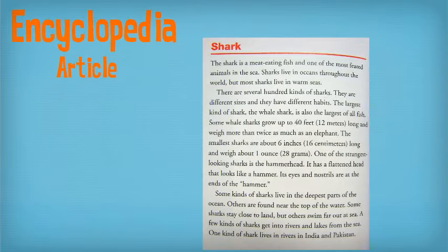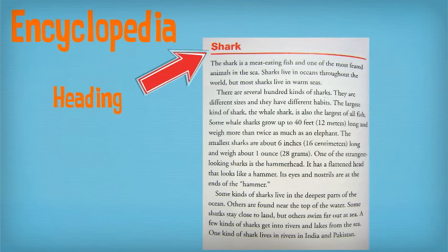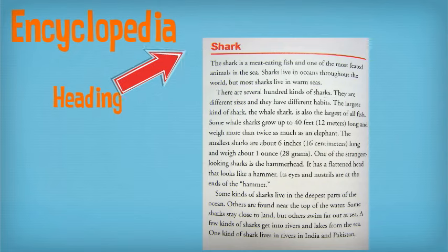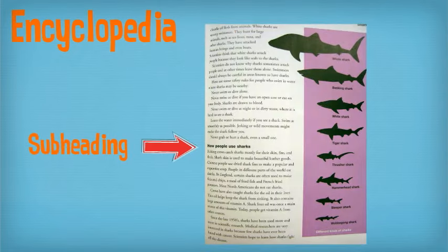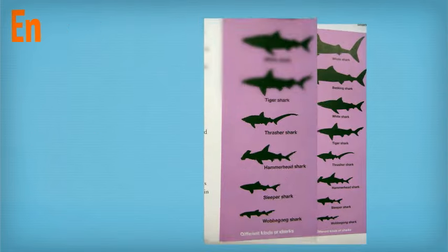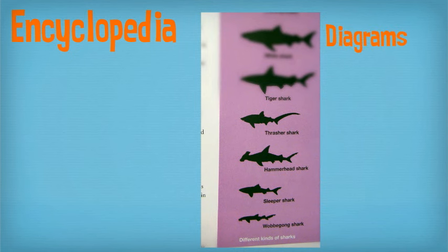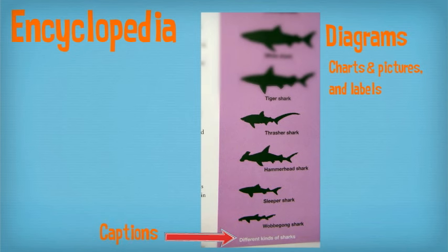Here's an example of an encyclopedia article on sharks. Notice that it has a heading at the top of the article. Throughout the article it uses subheadings to break it down into smaller chunks. They use diagrams, charts, labels, pictures, and even captions to tell you what they're about.